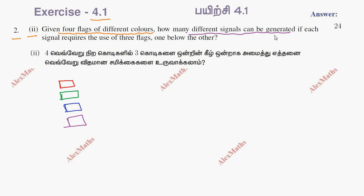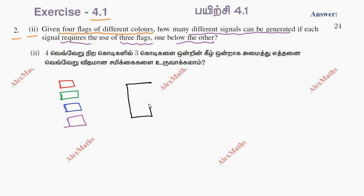Each different signal is created using 3 flags placed one below the other. We have 4 flags total. How many different signals can be generated?